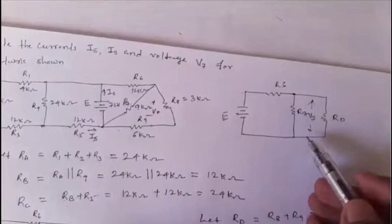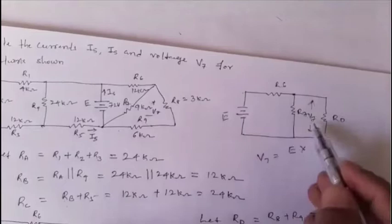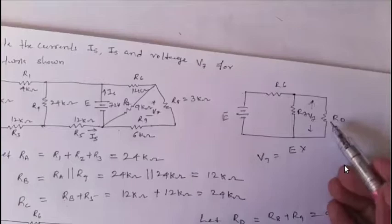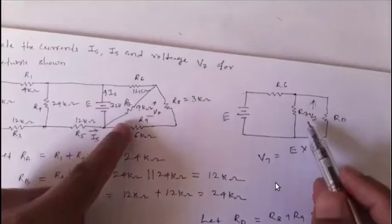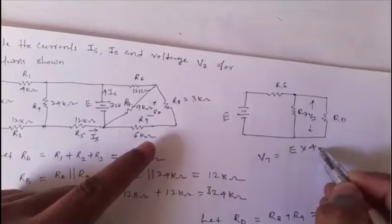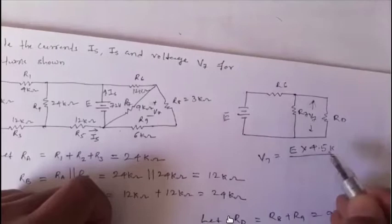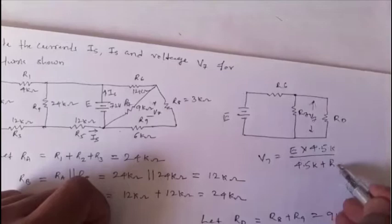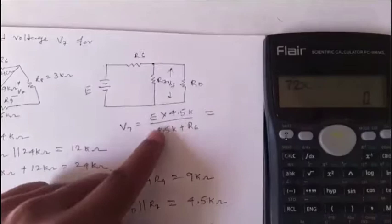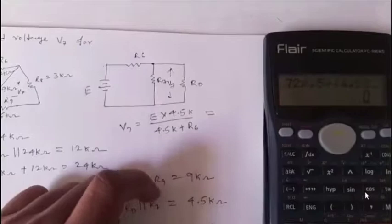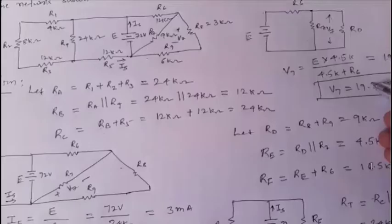Using voltage division: v7 = e × re / (re + r6) = 72 × 4.5 / (4.5 + 12) = 72 × 4.5 / 16.5 = 19.36 V.